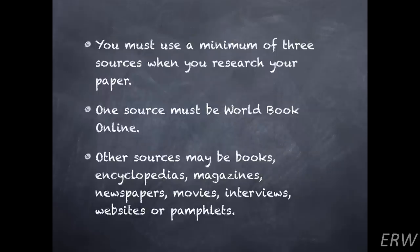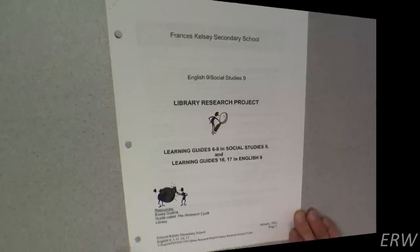Some last thoughts before moving on to part two: you must use a minimum of three sources when you research your paper. One source must be World Book Online — we have the passwords here in the library. Other sources may be books, encyclopedias, magazines, newspapers, movies, interviews, websites, or pamphlets. When you write your research plan, this information goes in your third column.